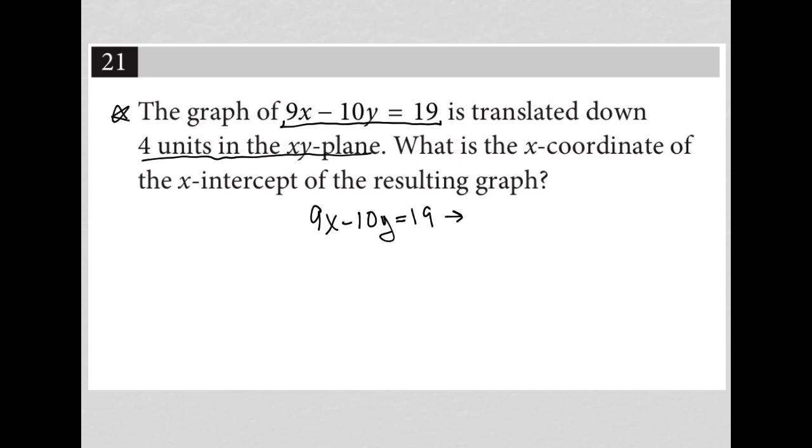Starting off by subtracting 9x from both sides of the equation. So I'd have negative 10y equals negative 9x plus 19. Then I can divide both sides by negative 10, leaving me with y equals positive 9 tenths x minus 19 tenths.